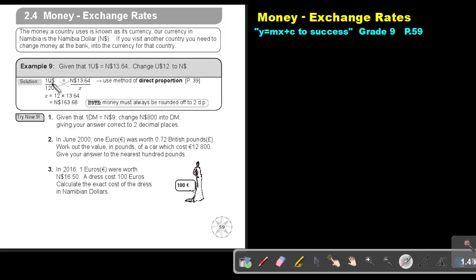Now we cross multiply. So 1 times X is X and 12 times 13.64 is 163.68.